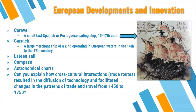There were different ships. The Caravel is a small, fast Spanish and Portuguese sailing ship used between the 15th and 17th centuries. The Carrack is a larger merchant ship used from the 14th to the 17th century. We also talked about the lateen sail, the compass — Europeans got their hands on it in the 14th century, while the Chinese had it all the way back in the 11th century — and astronomical charts for mapping the skies to know where you're going.